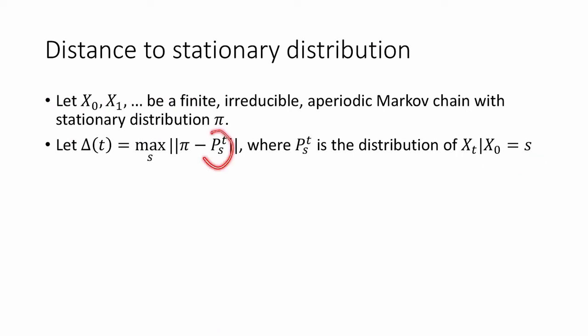That is, this is the distribution of the Markov chain after t steps, given that we started at s. This is the total variation distance between that distribution and the stationary distribution.